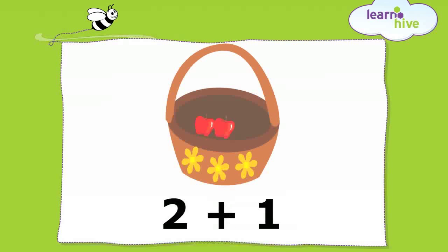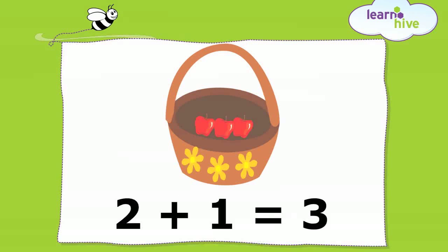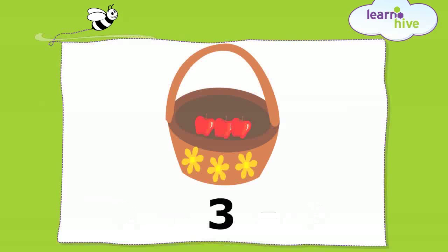Let us add one more apple to the basket. Now, we have three apples. So, when you add one to two, you get three.